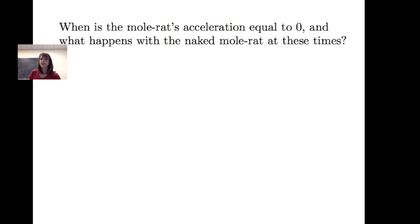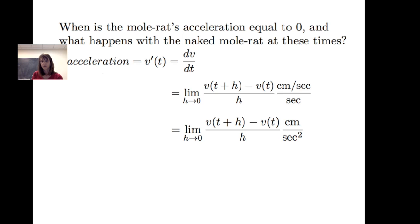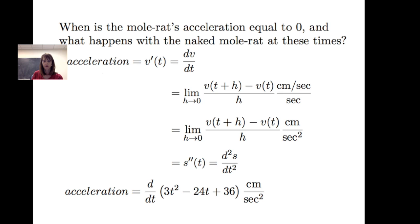Finally, let's consider acceleration. Acceleration is the instantaneous rate of change of velocity with respect to time, or dv/dt. Using the definition of the derivative, this is the limit as h goes to zero of v of t plus h minus v of t all over h, with units of centimeters per second squared. The acceleration equals the derivative of 3t squared minus 24t plus 36, which gives 6t minus 24 centimeters per second squared.